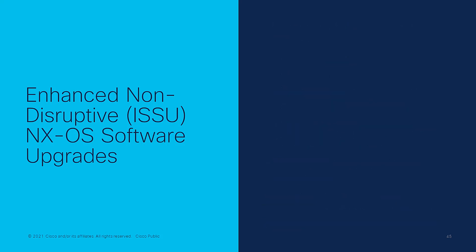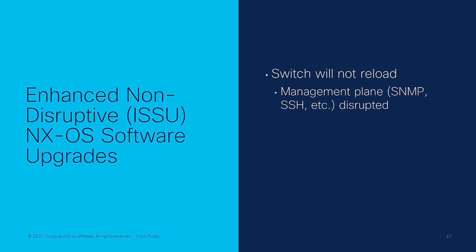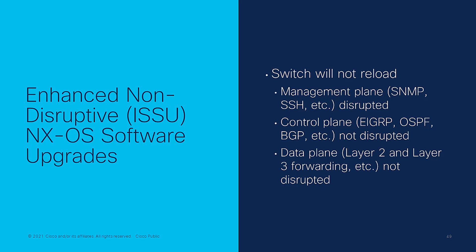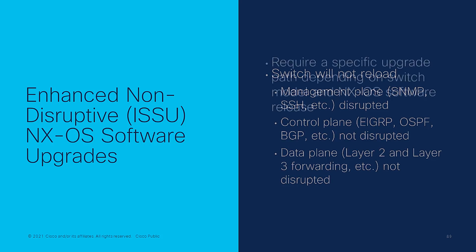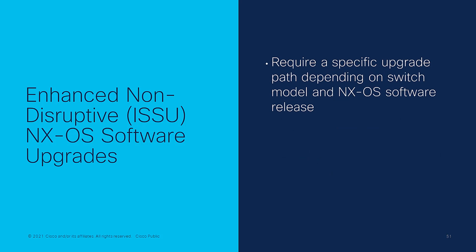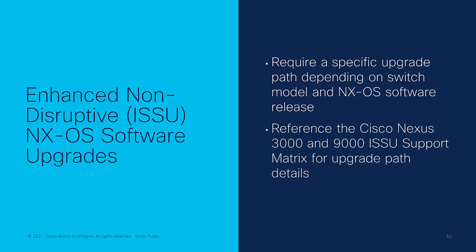An enhanced non-disruptive NXOS software upgrade's impact on the switch is almost identical to a standard non-disruptive upgrade. The switch will not reload; the management plane will be disrupted, meaning monitoring may be disrupted and your SSH session will be interrupted. However, the control plane will be frozen or locked into place, which allows the data plane to remain intact during the upgrade. Just like standard non-disruptive upgrades, enhanced non-disruptive upgrades typically require a specific upgrade path, and in some cases a non-disruptive upgrade may not be possible. Cisco recommends referencing the NXOS ISSU support matrix at cisco.com/go/NXOS-ISSU-matrix to validate support.